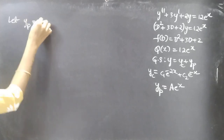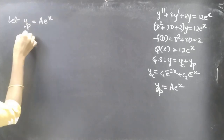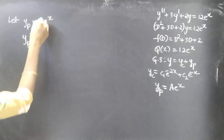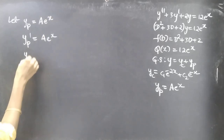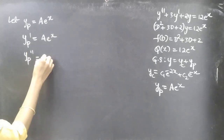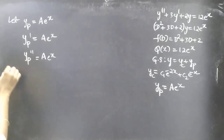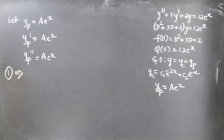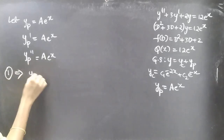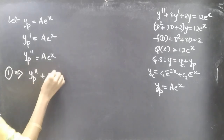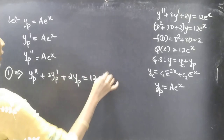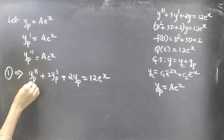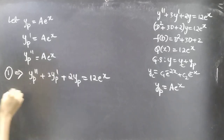Let yp = Ae^x. Then yp' = Ae^x and yp'' = Ae^x. We have chosen yp such that it satisfies the given differential equation, so we can write: yp'' + 3yp' + 2yp = 12e^x. Now substitute the values of yp, yp', and yp'' into this equation.